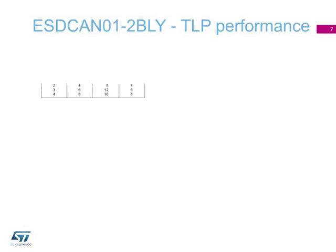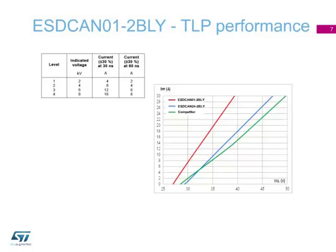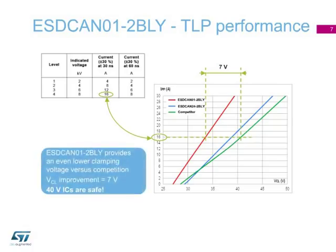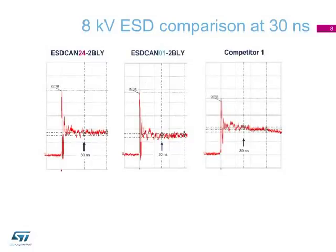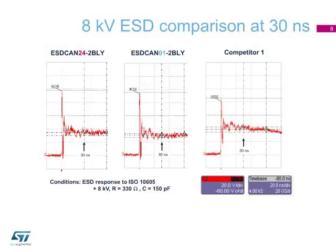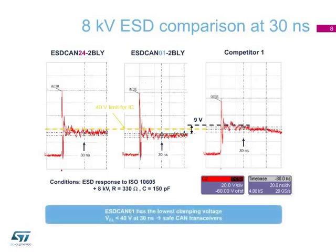The same test has been performed on ESD CAN 01-2-BLY. At 16 amperes, the clamping voltage has been improved by 7 volts versus competition. This 7-volt improvement increases the safety margin to keep 40-volt ICs safe. The three curves show the behavior of ST ESD CAN products and a competitor's device. Integrated circuits often use a 40-volt technology, so having a higher overvoltage may be risky. The ESD CAN 01 is the only device with a clamping voltage below 40 volts after 30 nanoseconds — 9 volts better than the competitor. The ESD CAN 01 has the lowest clamping voltage and is compatible with the 40-volt technology.